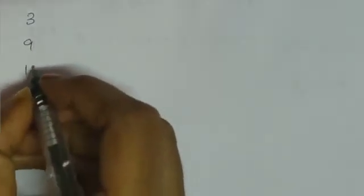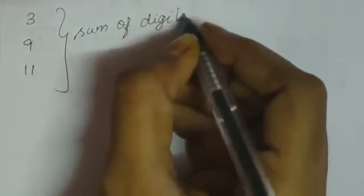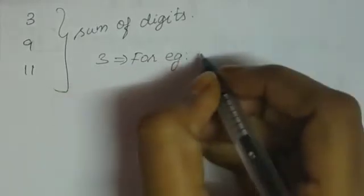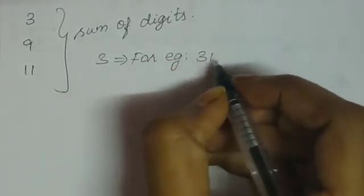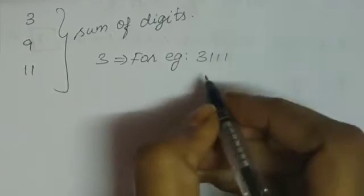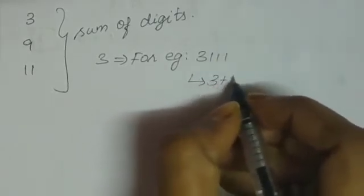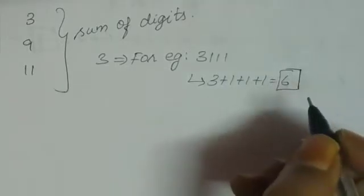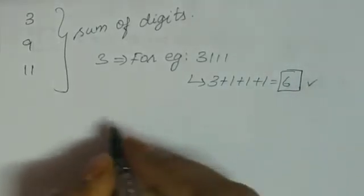Next combo is 3, 9, and 11. In these numbers, the common factor is the sum of digits. For example, for 3, take 3111. Sum of digits: add them all and the result is 6. Since 6 is a multiple of 3, the number 3111 is divisible by 3.